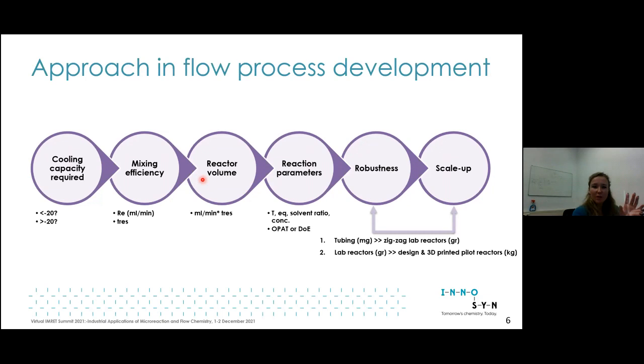We look at how exothermic the reaction is, because in organometallic reactions there's a spectrum in terms of heat and reaction enthalpy. Once that's determined we move to mixing efficiency. Mixing efficiency improves with Reynolds number, however due to limited material you either have to dilute a lot or have very narrow channels prone to clogging and high pressure drop.